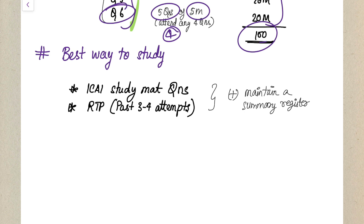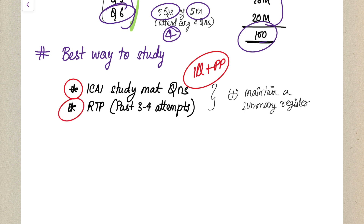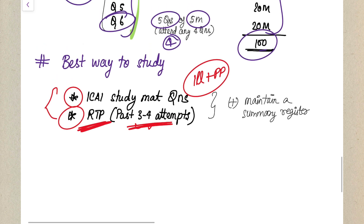The best and most effective way to study for accounts: first, cover every question in the ICAI study material — all illustrations and practical problems — without leaving a single question for the chapters you've chosen. Second, practice the last three to four attempts' RTPs, because questions are regularly picked from past RTPs. Minimum two to three questions per paper come from RTPs, so do not skip them. These two are the must-do items; any extra practice beyond these is a bonus.